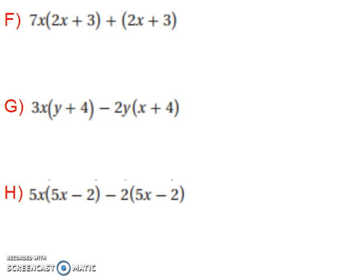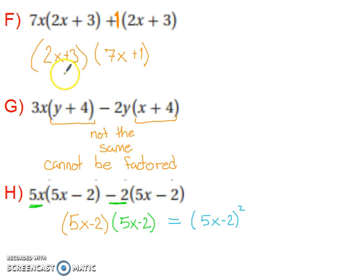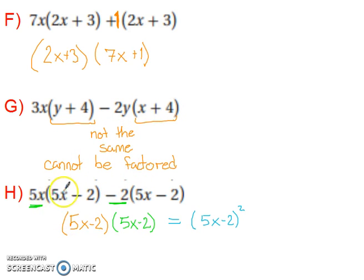Try these next three on your own. When you return to the video, the answer for all three will be revealed. For example f, remember there's a 1 in front of the binomial, so you factor out the binomial and you're left with 7x plus 1. For g, y plus 4 is not the same as x plus 4 — they're different variables, so they can't be factored. In the last one, we have 5x minus 2, so we factor that out and you're left with another 5x minus 2. When the two factors are the same, it's the same as saying 5x minus 2, that quantity squared.